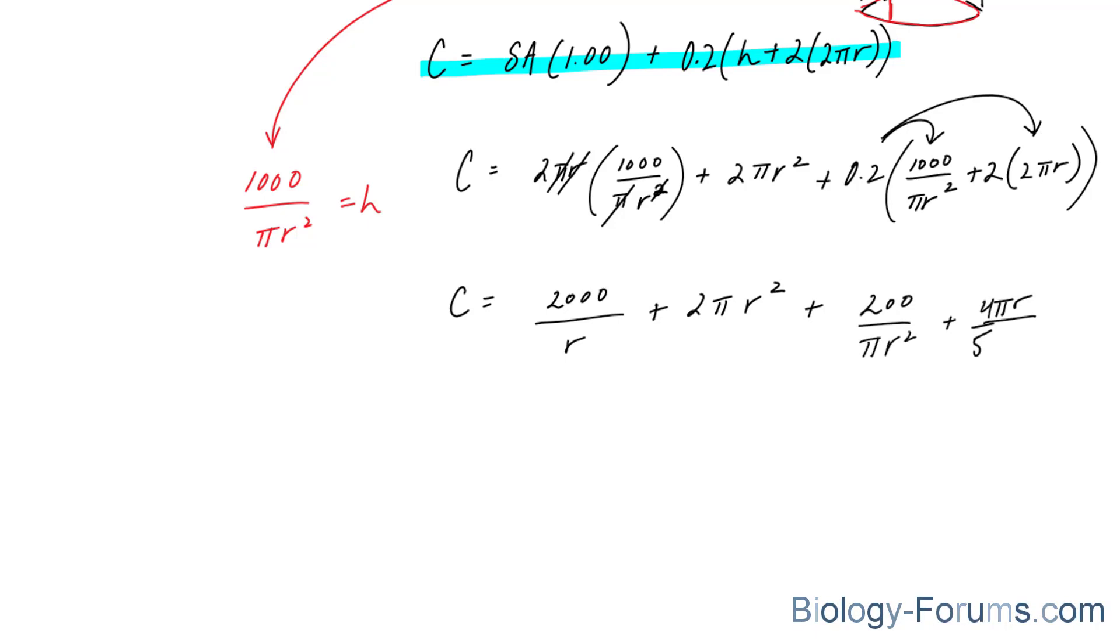Now we can go on to finding the derivative of C. That's not too hard to do. Remember, this is the same thing as saying 2000 r to the power of negative 1. That goes down, r to the power of negative 2, which means negative 2000 over r squared. So the derivative of this is negative 2000 over r squared using the power rule. The derivative of this is equal to 4 pi r.